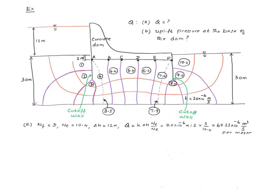Here I have calculated a value for Q. There are three flow channels and the number of equipotential drops is 10.4. The total head difference between the upstream and downstream sides is 12 meters. Applying the formula for Q, I end up with a value of 69.23 × 10⁻⁶ m³/s.